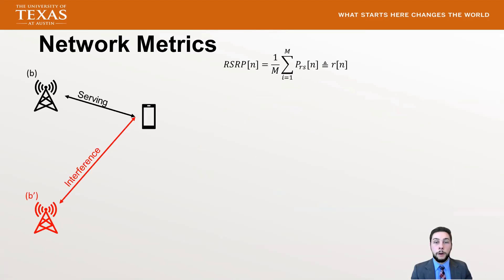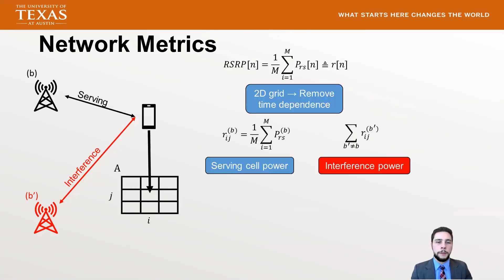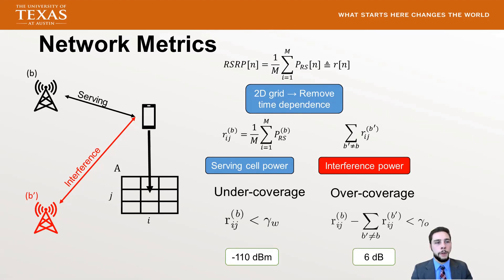For network metrics, one of the most commonly reported is RSRP — the received power averaged over the reference signals. We reformulate it onto a 2D grid, looking at per-position RSRP values rather than time-dependent instances. We examine the serving cell RSRP versus the interference power, which is the sum of all interfering cells. This naturally formulates into two metrics: under coverage, when serving cell power is below a threshold (−110 dBm), and over coverage, when interference is strongly close to the serving cell power (6 dB).